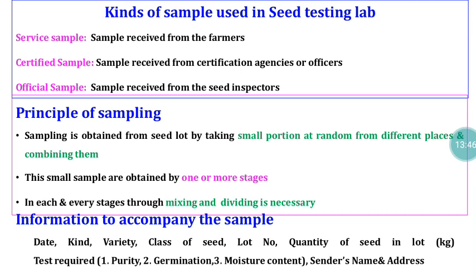For a service sample, the farmer has to make a payment to the seed testing laboratory. For a certified sample, the seed certification official collects the seed testing charges at the time of seed field registration. For an official sample, the charges are paid by the seed inspector, not by the seed seller. These are the three kinds of samples. Regarding principles of sampling — a primary sample is obtained from the seed lot by taking small portions at random from different places.